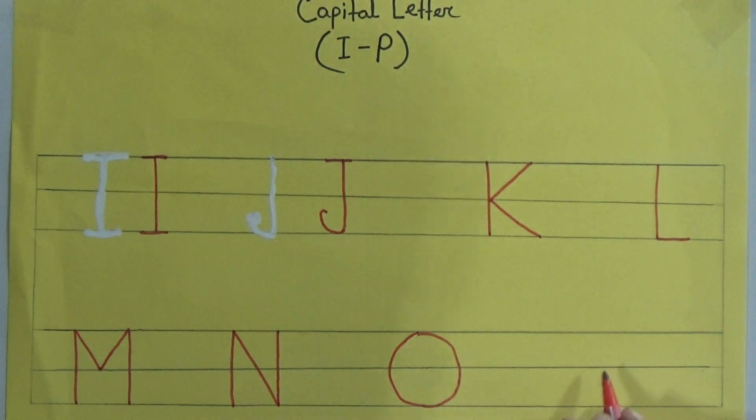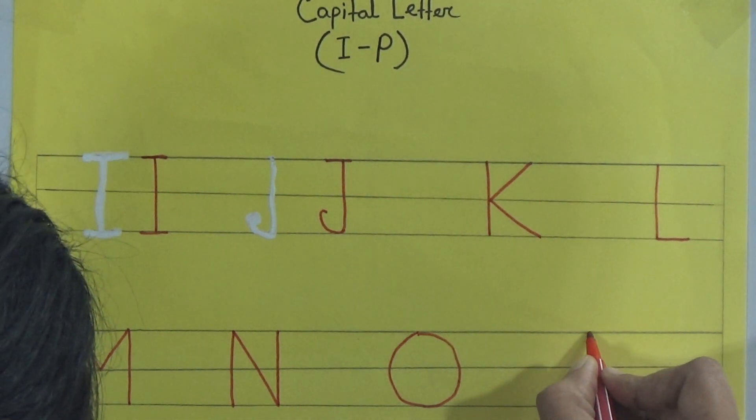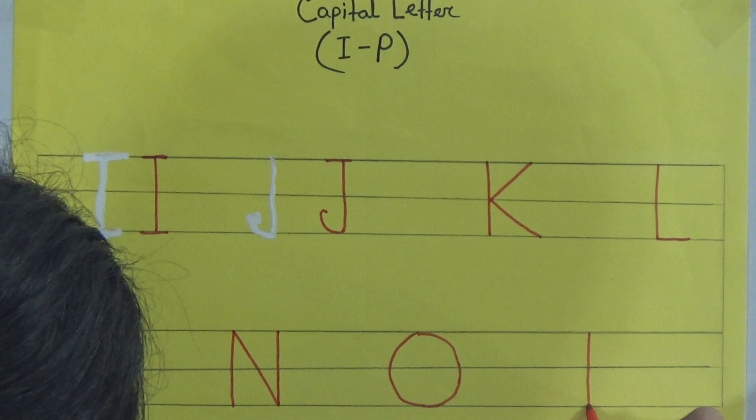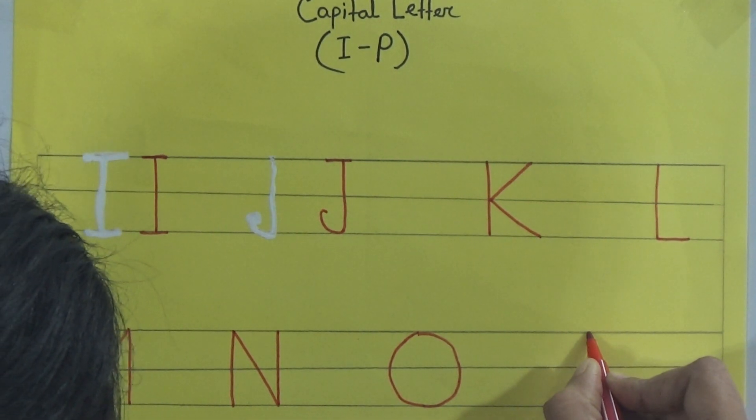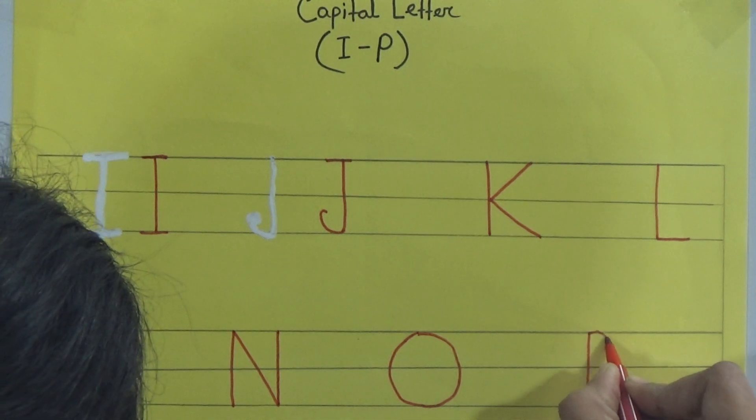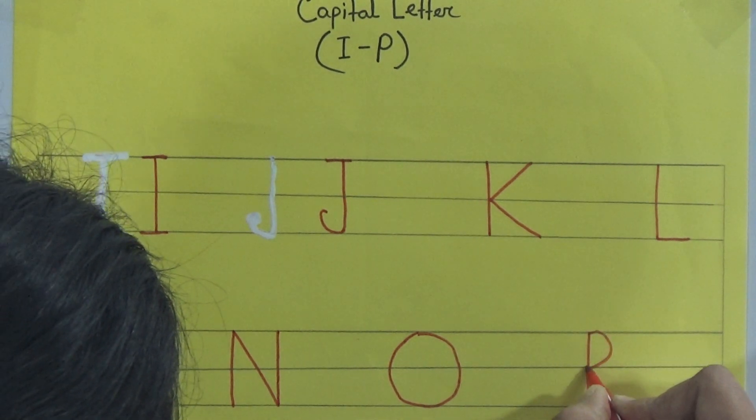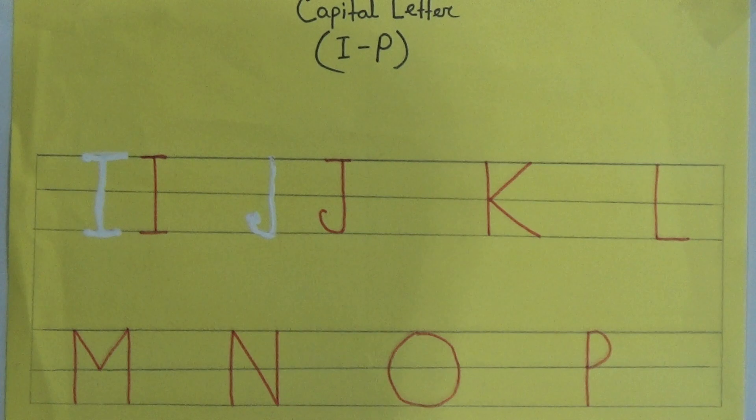And last one is P. One standing line here and a small curve, okay, up to the middle. And that makes P.